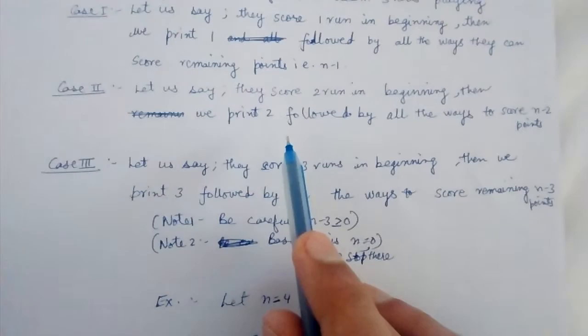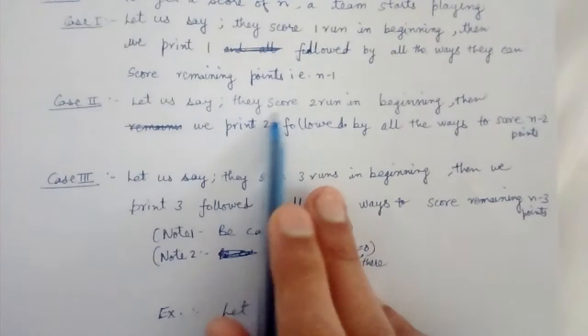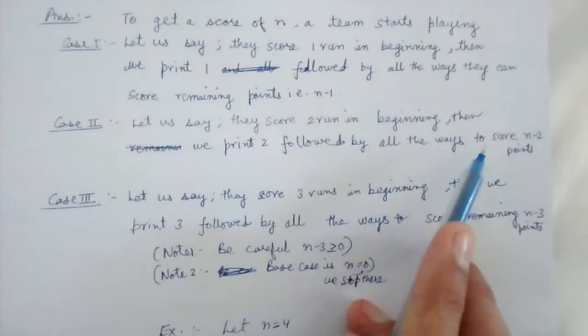So let us say, what is another case? Let us say they score 2 runs in the beginning. Then we print 2 and followed by all the ways to score the remaining N-2 points.